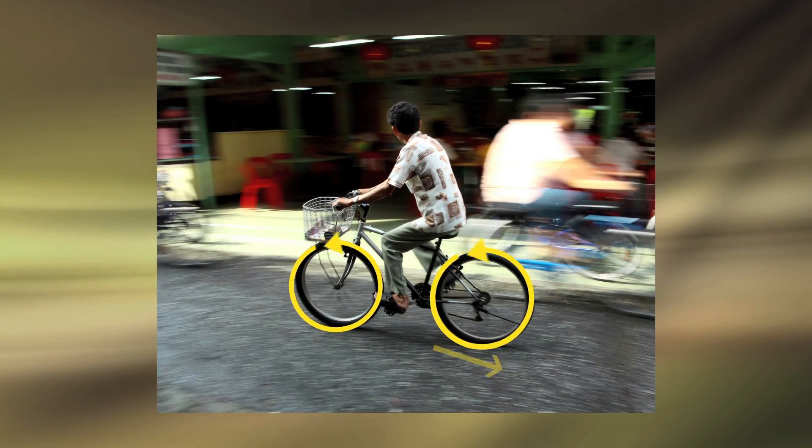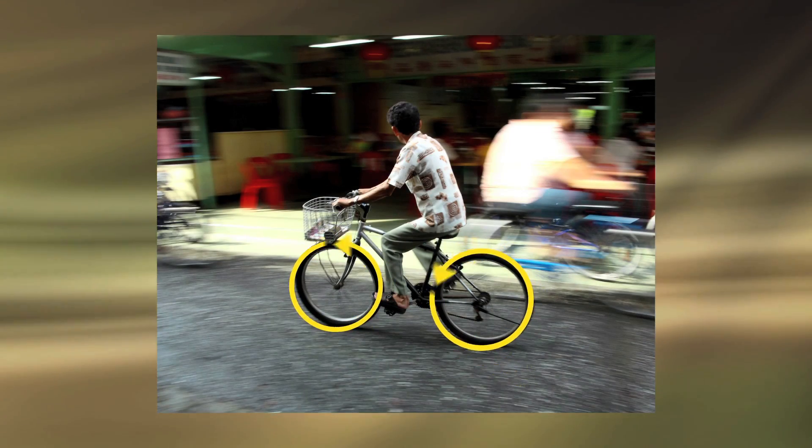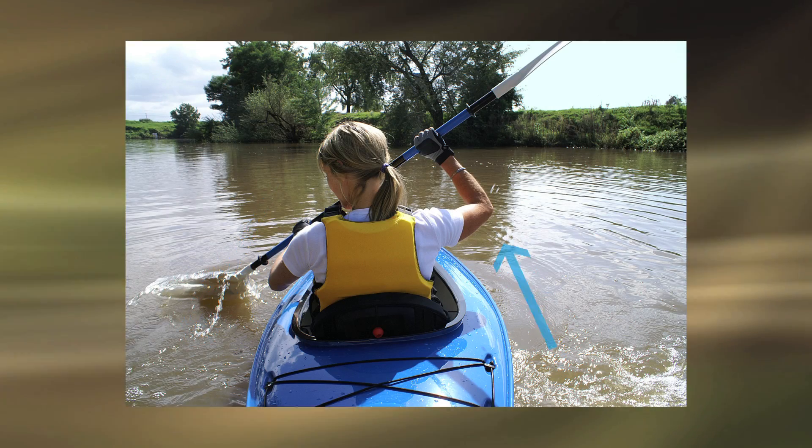The wheels on a bicycle push the road backwards. The road then pushes the bicycle forward. A paddle pushes the water backwards. The water pushes the boat forward.